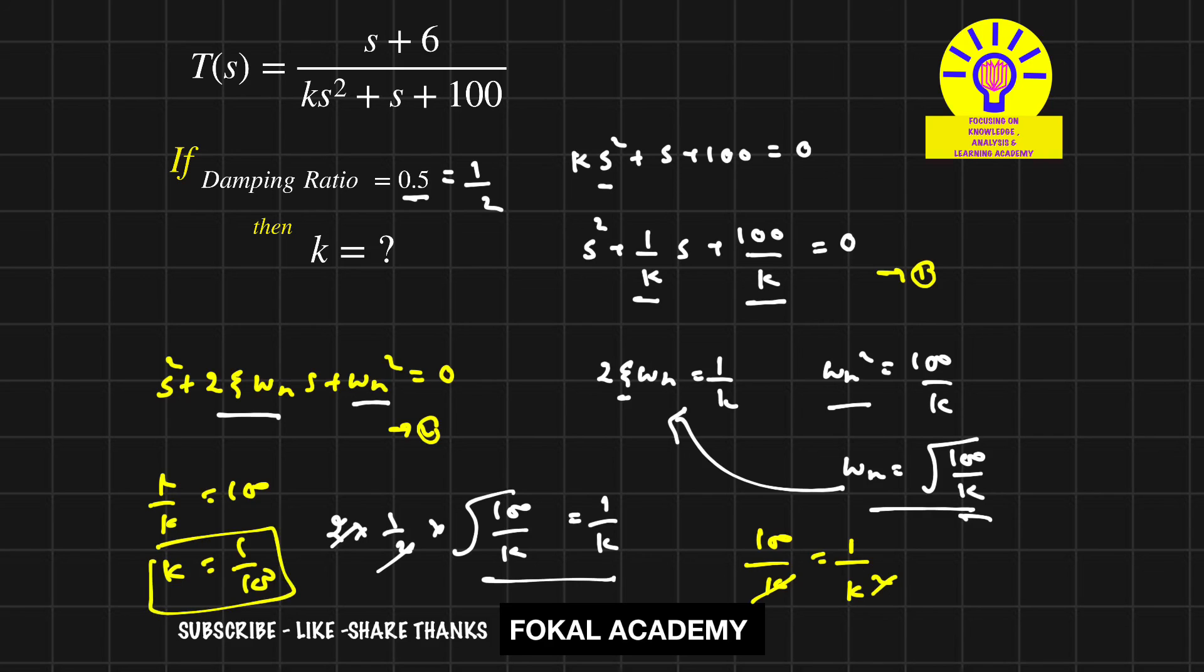When k=1/100 for the given transfer function, the damping ratio is 0.5. This is the process for finding the k value.